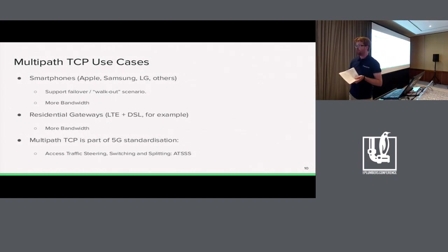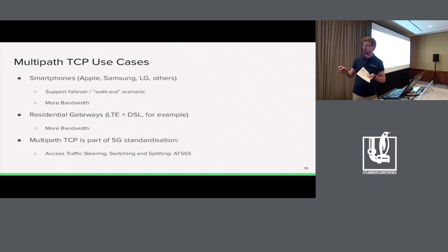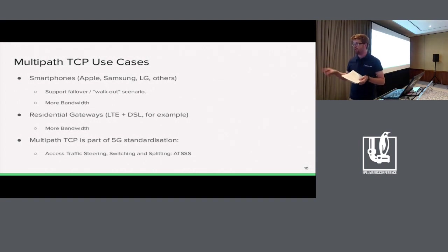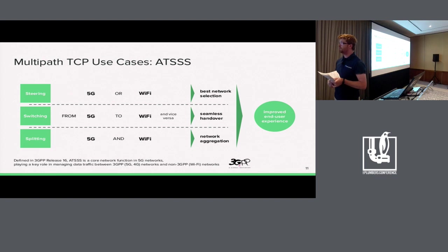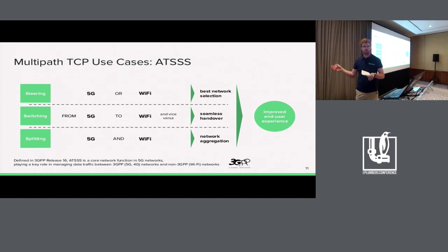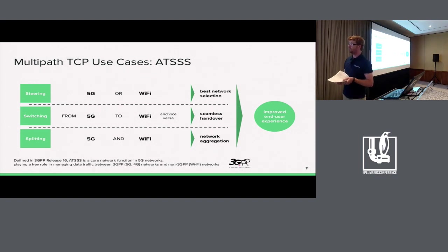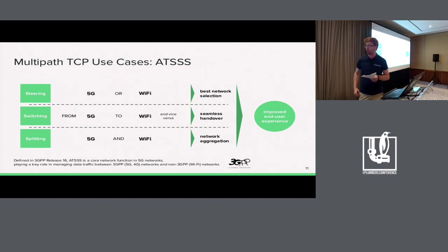Another very important use case is that multipath TCP is part of 5G standardization. It is part of the ATSSS function — Access, Traffic, Steering, Switching and Splitting. What this means is that to improve end-user experience you can select the best network — 5G, Wi-Fi or 4G, especially when 5G is not available everywhere. You can have seamless handover, switching from one network to another, and network aggregation if the operator wants to give you more bandwidth.